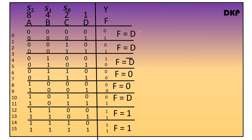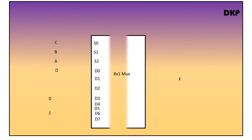The 8 inputs to the multiplexer are: D, D, D bar, 0, 0, D, 1, 1. Now we have to implement this using the 8-to-1 multiplexer. This is the 8-to-1 multiplexer which consists of three select lines S0, S1, S2, and eight inputs D0, D1, D2, D3, D4, D5, D6, D7, and one output F.